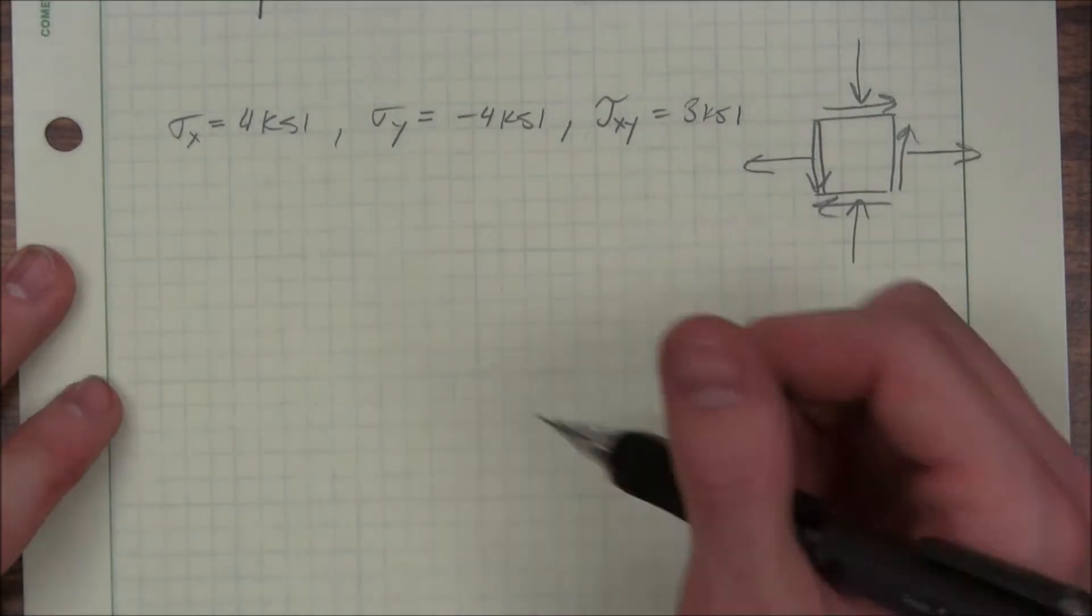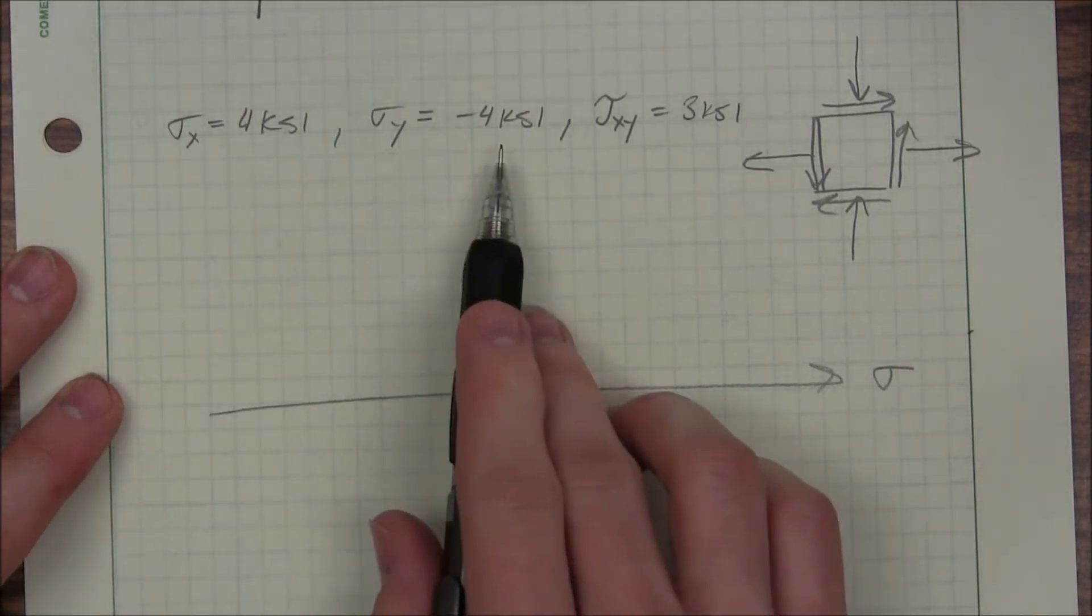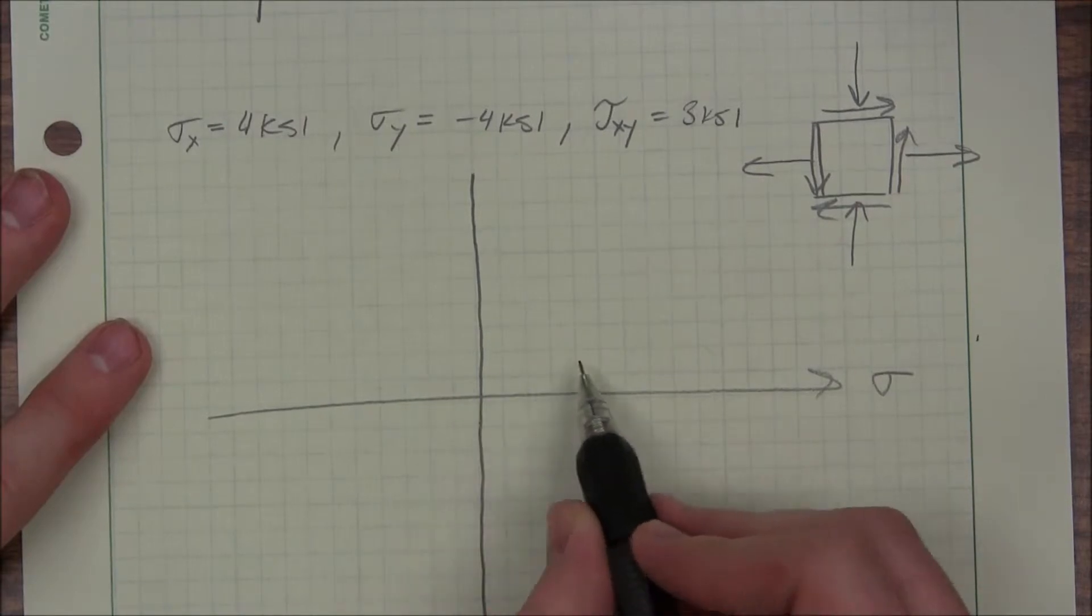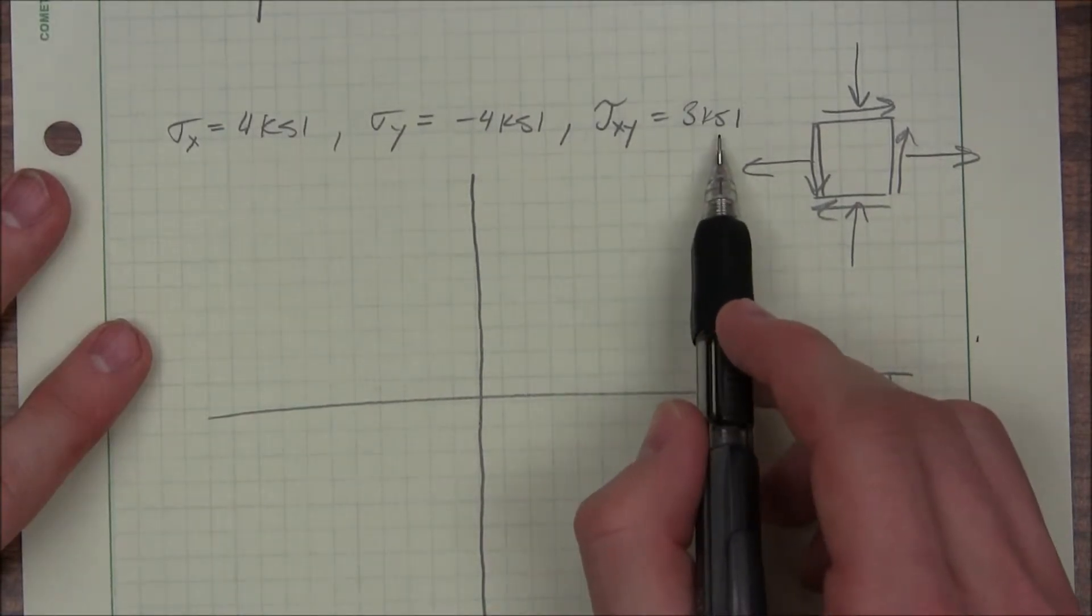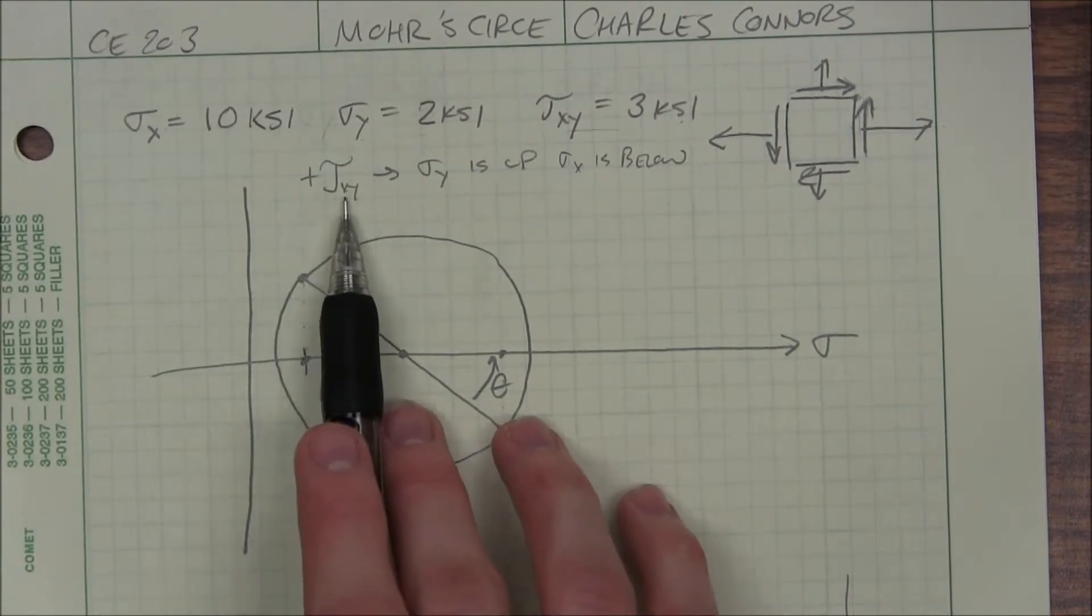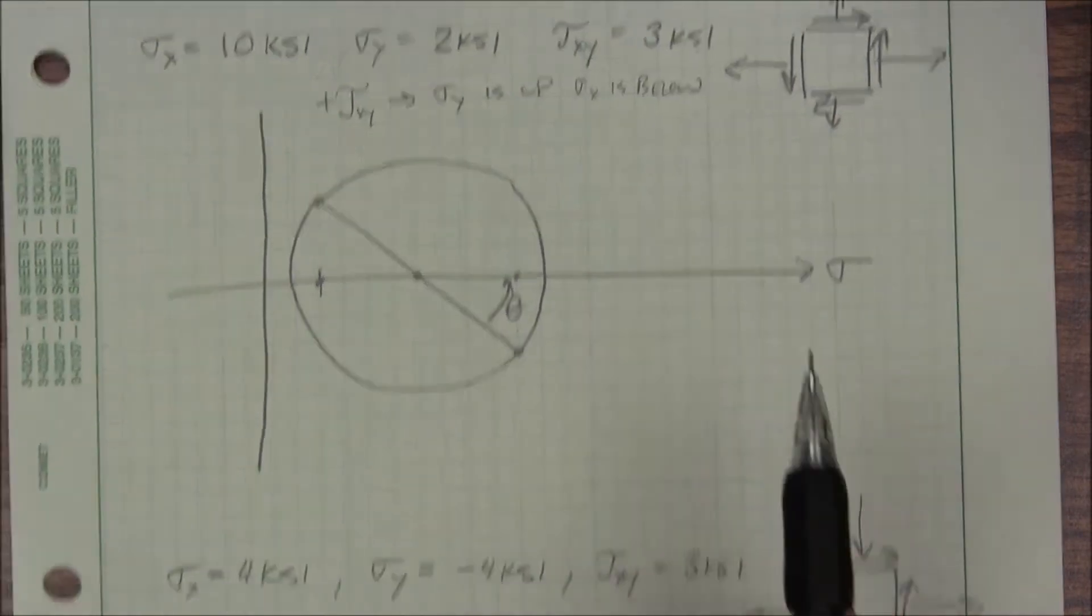Let's look at Mohr circle. I'll give myself room on both the positive and negative side. I have a positive tau XY, so like we said in the last problem, positive tau XY means Y is up and sigma X is below.